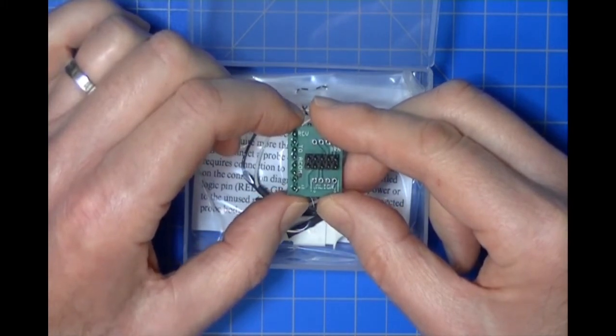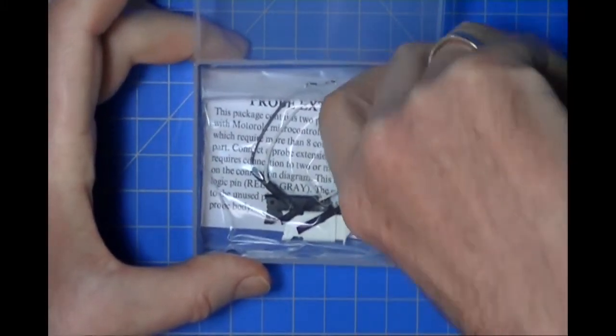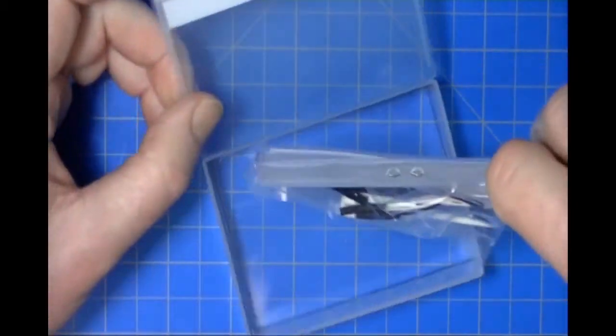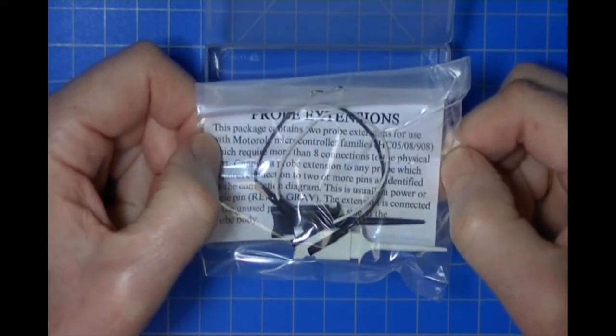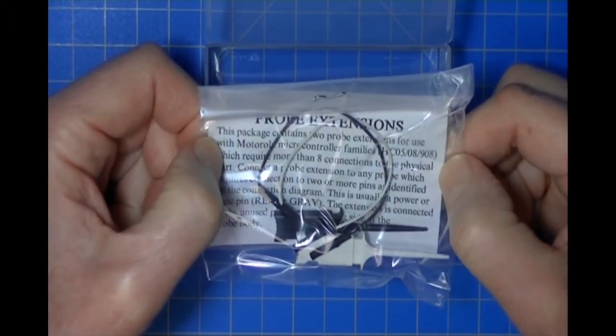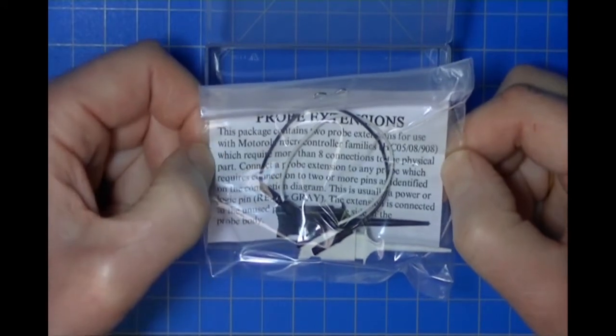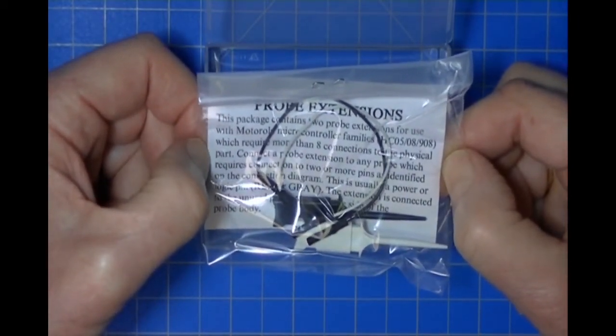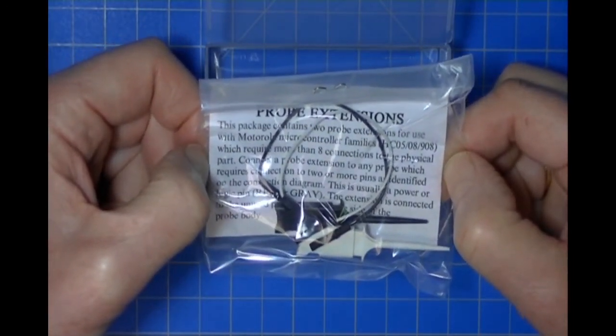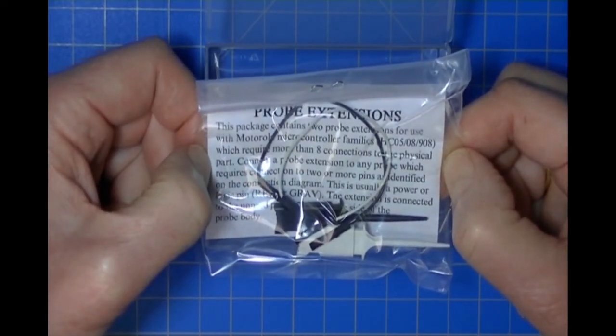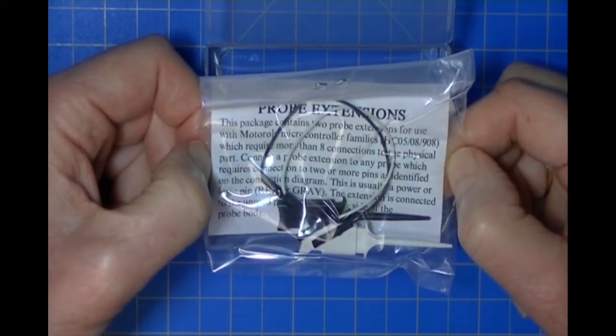These are called probe extensions. The reason we provide probe extensions is that occasionally you will need to establish connection to pins on the microcontroller so that the microcontroller will be in a mode where we can communicate with it. There are eight colored probes, and occasionally you need to take another pin and force it to a logic state that will permit communication.